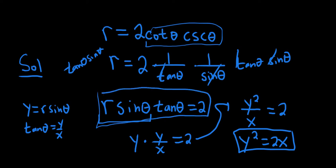Once you're here, you can see that you can use the formula. r sine theta is y, and tangent of theta is y over x. y times y gives us y squared. Multiply by x, and we end up with the answer.